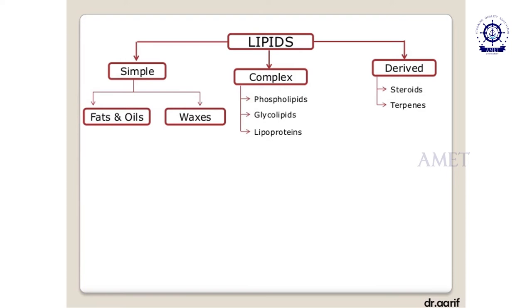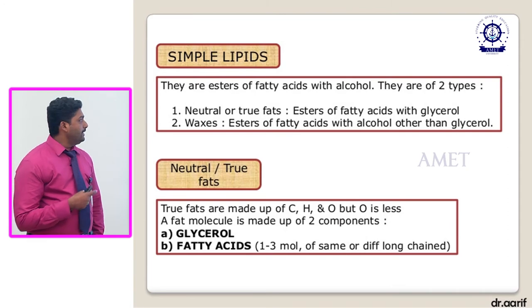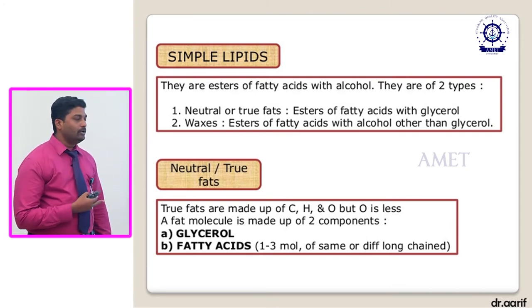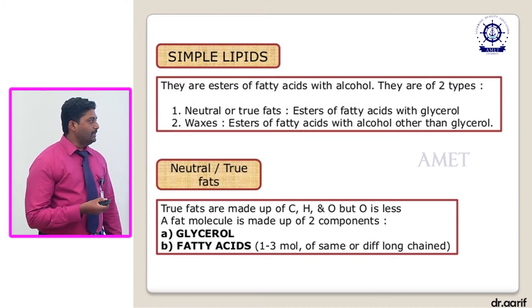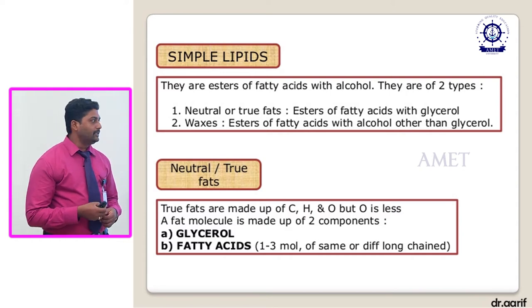Lipids are classified into three types: simple, complex and derived. Simple lipids — otherwise called fats, oils and waxes — are esters of fatty acids with alcohol. There are two types of simple lipids: neutral or true fats, which are esters of fatty acids with glycerol, and waxes, which are esters of fatty acids with alcohols other than glycerol. True fats are made up of carbon, hydrogen and oxygen, with very little oxygen. A fat molecule consists of two components: glycerol and fatty acids.